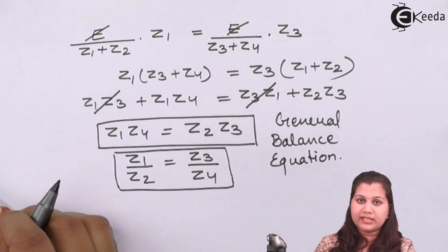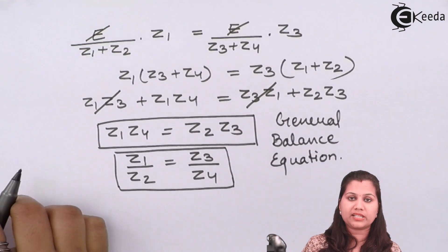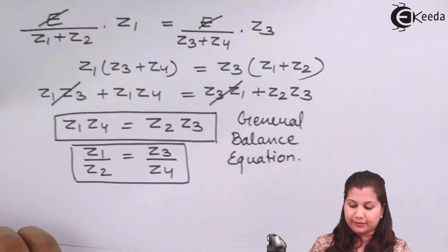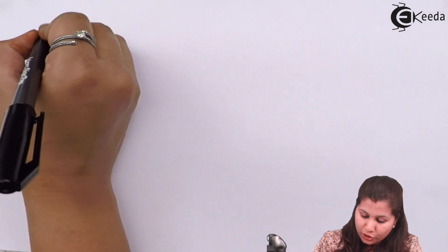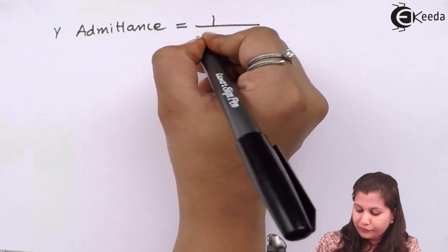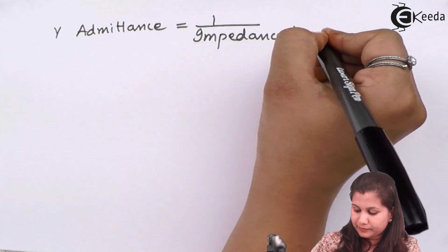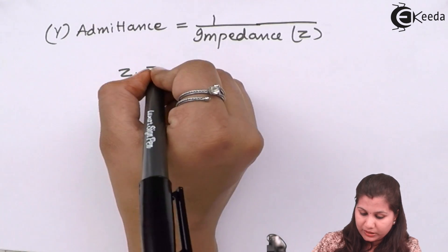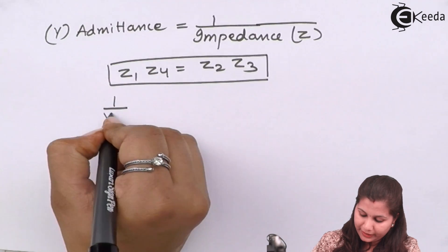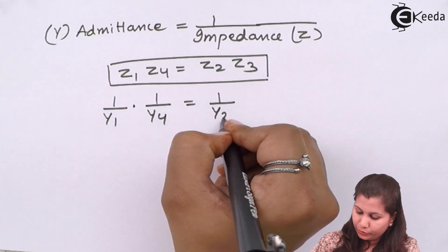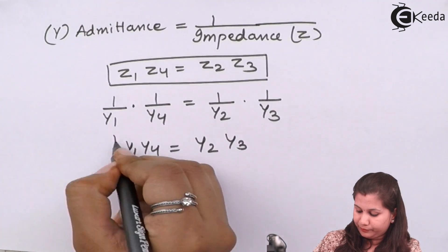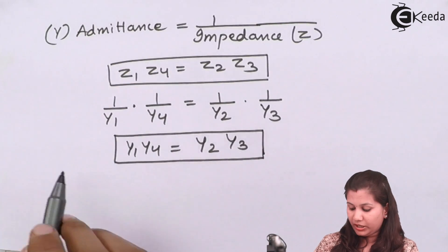Z1, Z2, Z3, and Z4 are complex impedances — combinations of resistance, capacitance, and inductance. If we express the balance equation in the form of admittance, we use the fact that admittance Y is the reciprocal of impedance Z. Replacing each impedance: (1/Y1)·(1/Y4) = (1/Y2)·(1/Y3), which gives us Y1·Y4 = Y2·Y3. This is the balance equation expressed in admittance form.